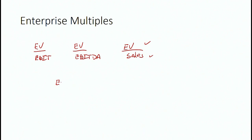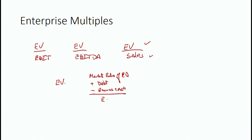So we have a measure of value, which is enterprise value, and what you get is either EBIT, EBITDA, or sales. To make this useful, we should first start with what we mean by enterprise value. There are two ways of looking at it. One is the market value of equity plus debt minus excess cash, and we refer to that as enterprise value — basically the value of the operations of the firm.